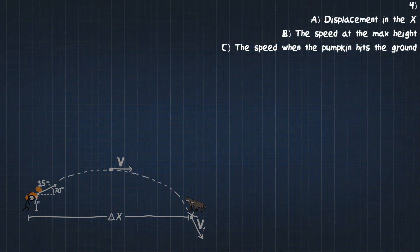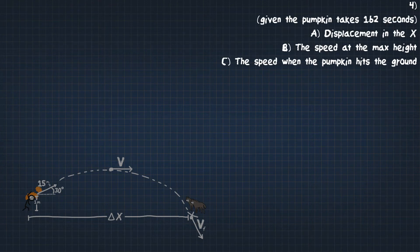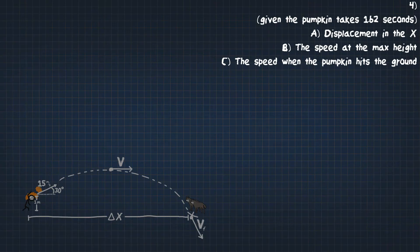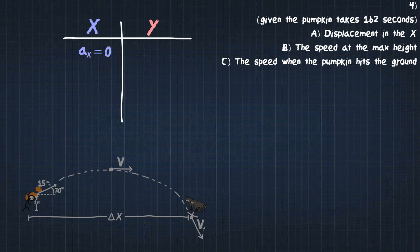We know it's going to be taking time of 1.62 seconds. Knowing all of that, we're trying to find what the displacement is in the x direction - how far this moves in the horizontal direction. Let's see everything that we know for this problem. In the x and the y: acceleration x equals 0, acceleration y equals negative 10 meters per second squared.